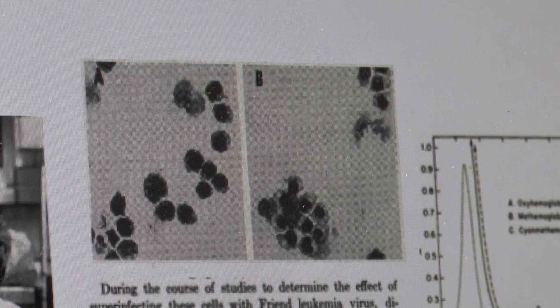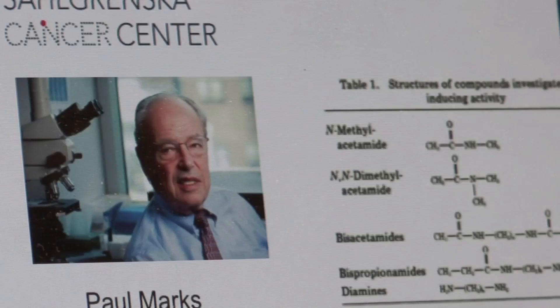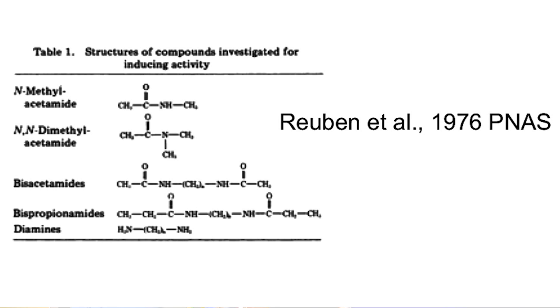It looked like the cells had all the propensities of red blood cells — something had happened to them. To get insight into this, Charlotte Friend contacted Paul Marks in New York, a world-leading expert on hemoglobin synthesis, the red molecule inside red blood cells. He said that most likely what she had done was make these leukemia cells into normal red blood cells — she had differentiated them. Paul Marks became very interested and worked with Charlotte Friend to develop molecules even more potent at inducing cancer differentiation than DMSO, since DMSO had been banned from patient use by the FDA.